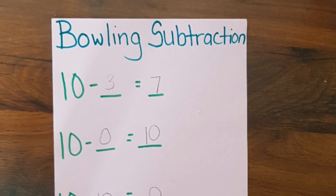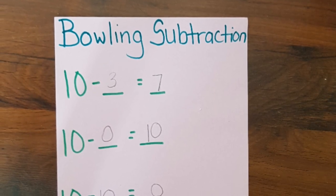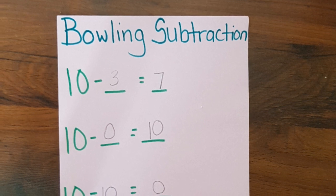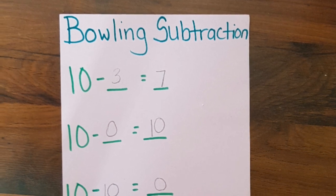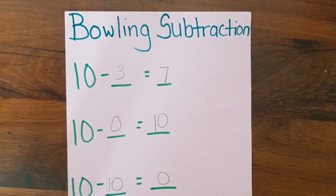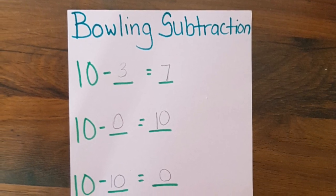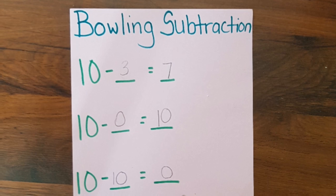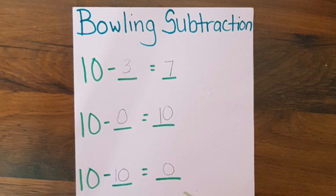Our subtraction sentence for this round would be ten take away ten equals zero. So I hope you enjoyed this game. Try it out and have fun!